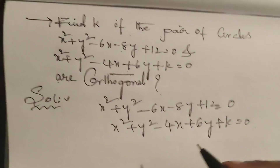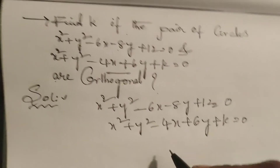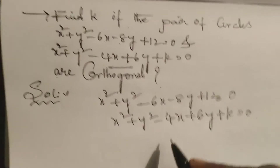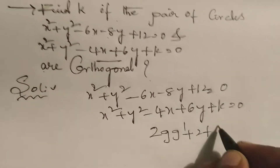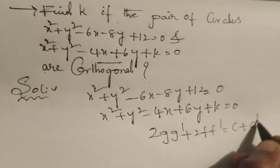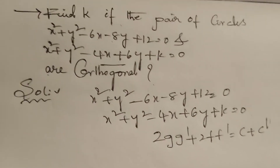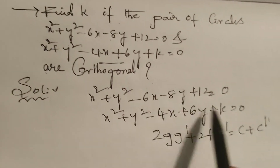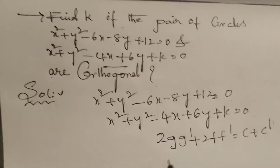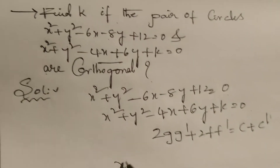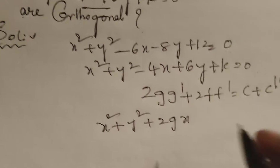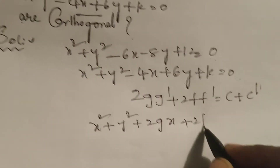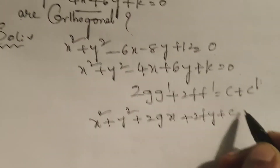If the condition means the given circles satisfy orthogonal, the condition is: 2gg' + 2ff' = c + c'. Comparing the given circles with the standard circle equation x² + y² + 2gx + 2fy + c = 0.